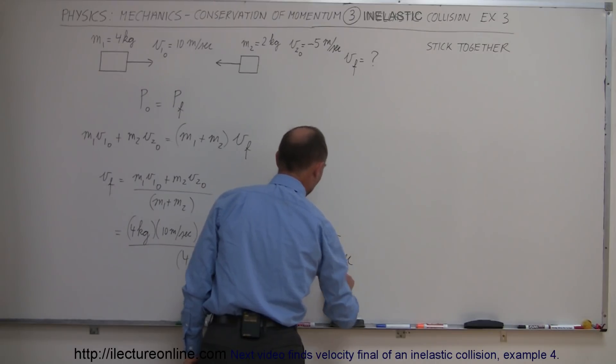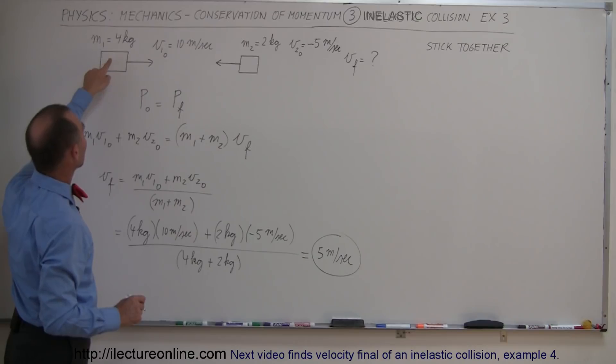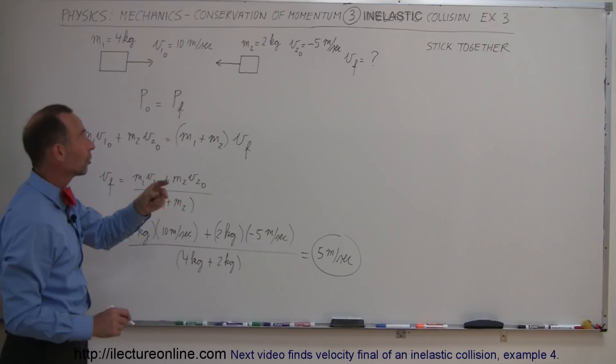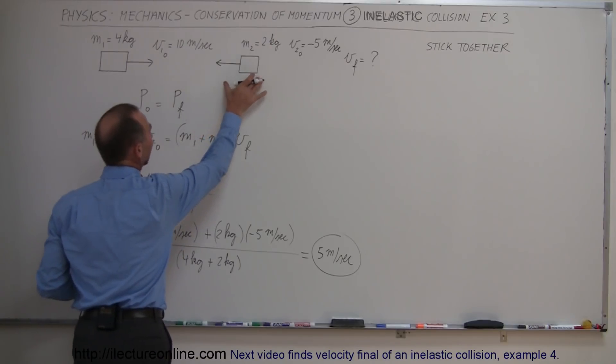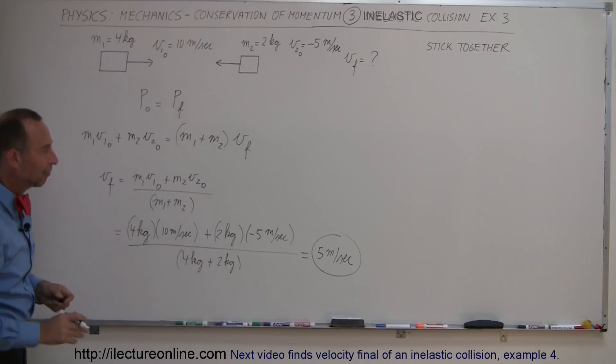Because obviously the object that has the most mass and has a larger velocity movement to the right will have a larger positive momentum to the right than this object will have negative momentum to the left. So we expect both of them still to be moving to the right after the collision. And that's how we do that.